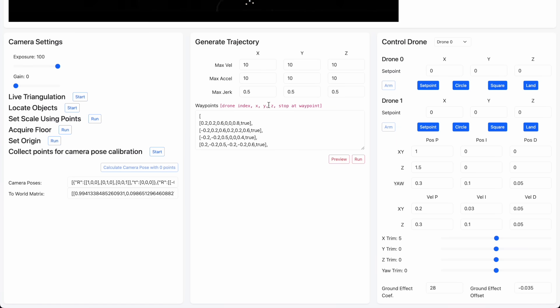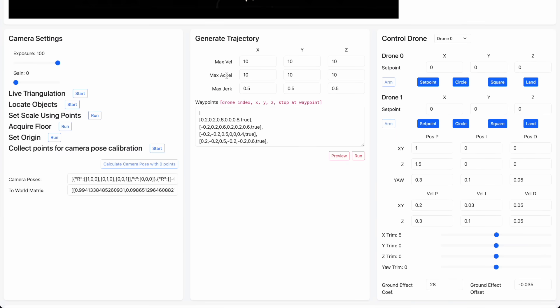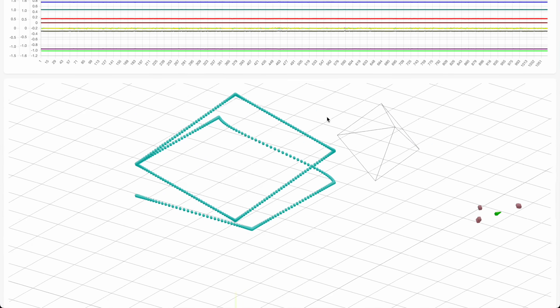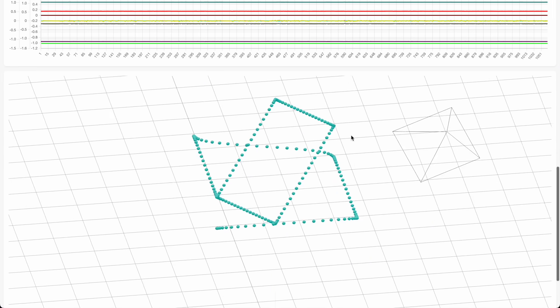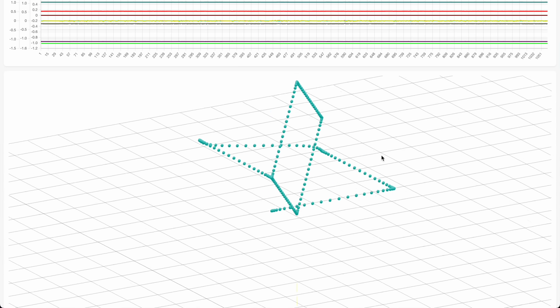In the middle, we have a motion planning section, which allows you to set the max velocity, acceleration, and jerk for each axis. You can then put in some waypoints and hit preview, and the motion planner will generate a flight path, satisfying those constraints. You can see here that if you relax the max jerk, the flight path looks different.